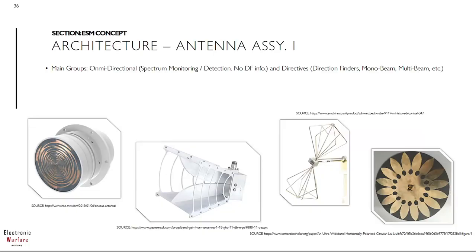Starting with antenna assemblies, we have four examples typically used in several ESM systems. From the right side, we have a sinus cavity antenna, typically wideband from 2 up to 18 GHz, dual circular polarization and low to medium gain. This is used for interferometers and radar warning applications, which belongs to ESM due to compact size, RF phase accessibility and wide beam coverage. With four antennas, we could easily cover 360 degrees of any platform.